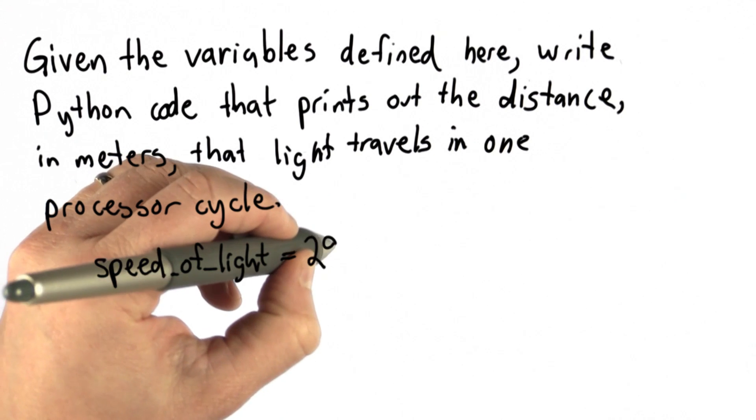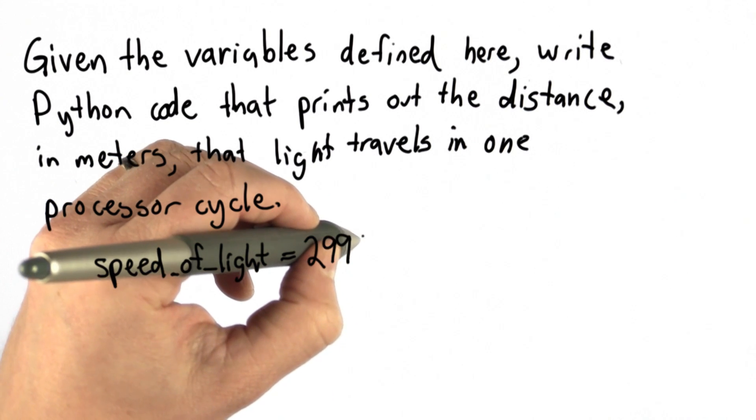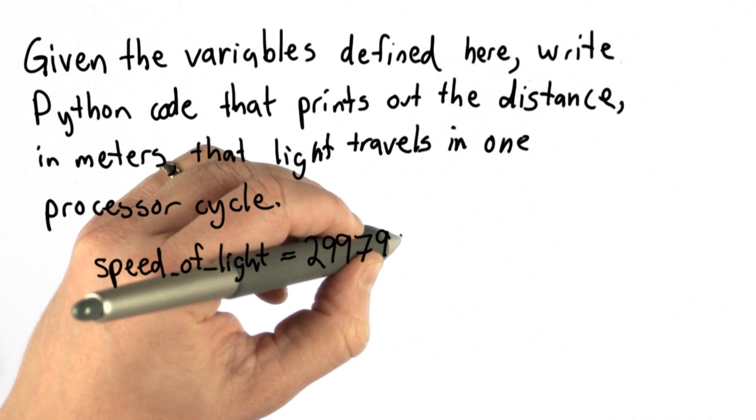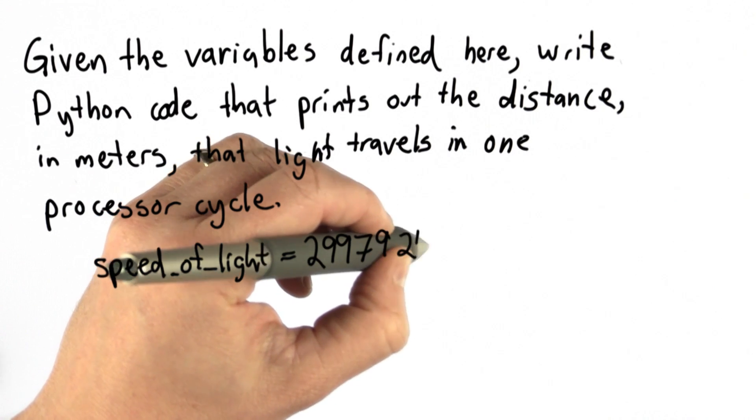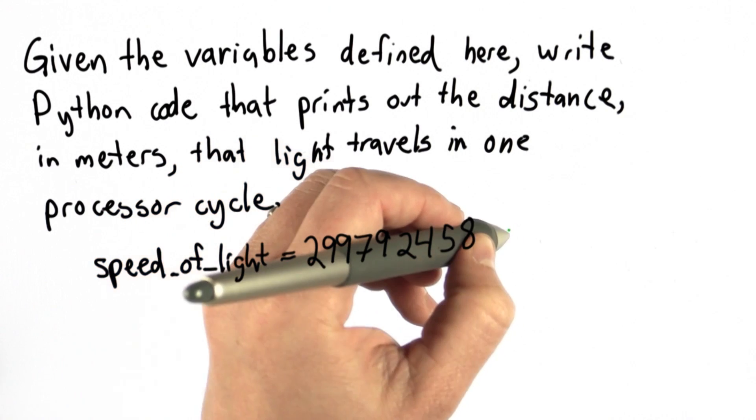The first variable is speed_of_light, and we've assigned to it the number of meters that light travels in a second. It might be hard to remember that, so we also have a comment there.